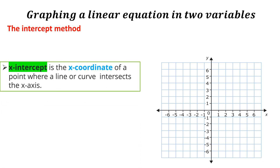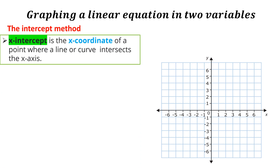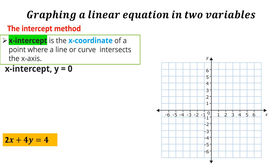But before that, let us define first what is an x-intercept. It is the x-coordinate of a point where a line or curve intersects the x-axis. So at this time, we will be getting the x-intercept first. Getting the x-intercept, we should set y equal to 0.